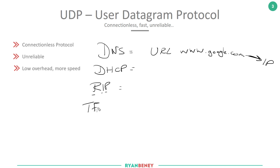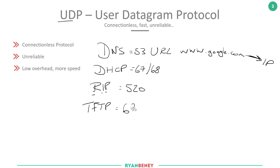We also have things like TFTP, the Trivial File Transfer Protocol. Not only do we need to remember these more common UDP applications, but we also need to remember what ports they run on. The text you'll be reading for the CSEN certifications will normally list around five to seven protocols for both TCP and UDP along with the port numbers you need to remember.